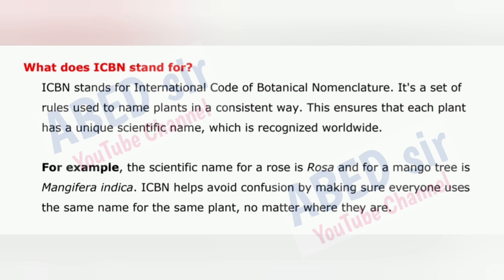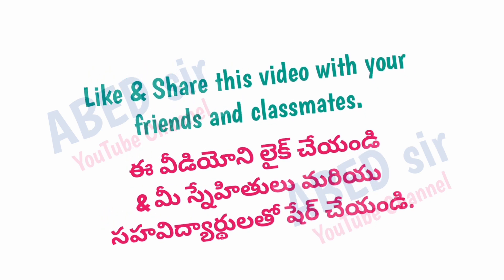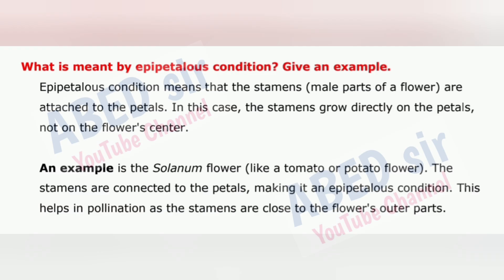Next important question: What is meant by epipetalous condition? Give an example. Epipetalous condition means that the stamens, the male parts of a flower, are attached to the petals. In this case, the stamens grow directly on the petals, not on the flower's center. An example is the Solanum flower, like a tomato or potato flower, where the stamens are connected to the petals. This helps in pollination as the stamens are close to the flower's outer parts.